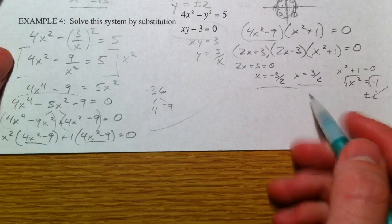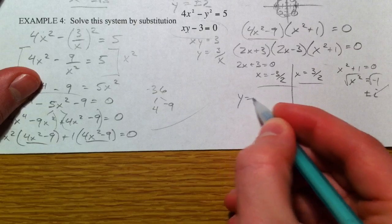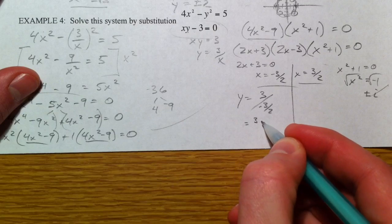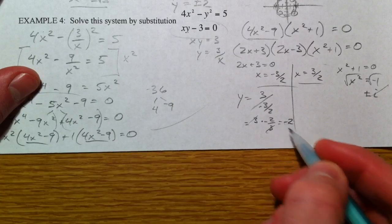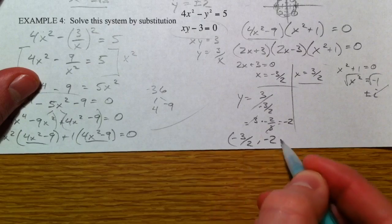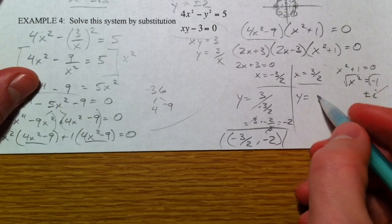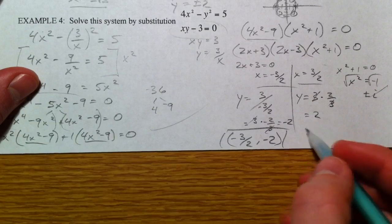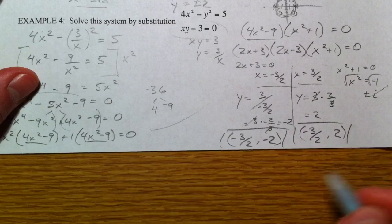Now we take both x values and plug them into y equals 3/x. When x equals negative 3/2: y equals 3 divided by negative 3/2, which is 3 times negative 2/3 — the 3's cancel and you get negative 2. So (negative 3/2, negative 2) is one solution. When x equals 3/2: y equals 3 divided by 3/2, which is 3 times 2/3 — the 3's cancel and you get positive 2. So (3/2, 2) is the second solution.